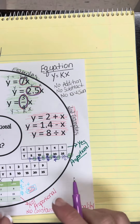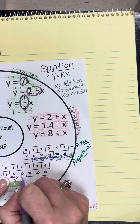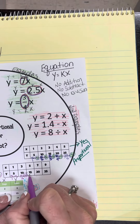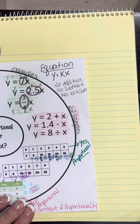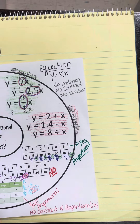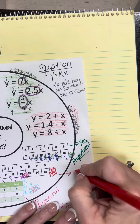Let's look at this last table. 5 over 1 equals 5. Then 10 over 3 — 10 divided by 3 is 3.3 repeating. We can stop right there. This right here makes that table not proportional. That one is no — no constant rate of change.